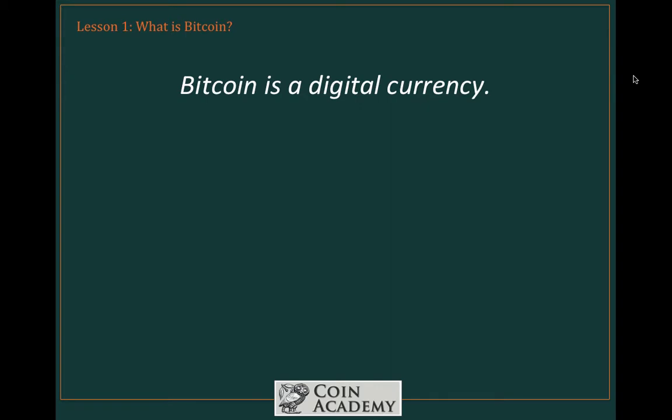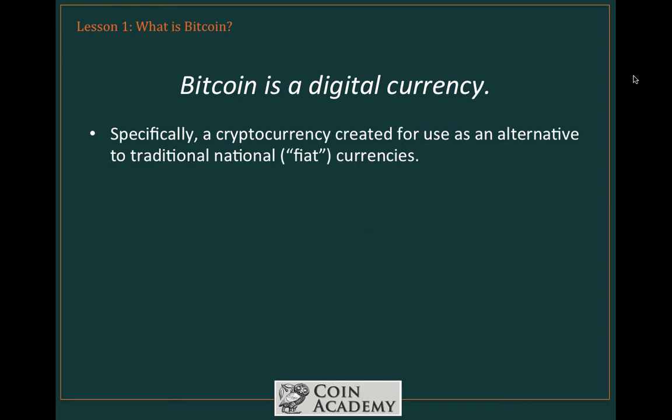A short definition: Bitcoin is a digital currency. That's a very simplistic definition, but it captures the essence of what makes Bitcoin unique. There is no physical counterpart for Bitcoin — no piece of paper, no scrap of metal that represents the currency. Instead, it's a string of numbers that resides on a computer. It is virtual. It is digital. Specifically, Bitcoin is a cryptocurrency, and it was created for use as an alternative to traditional national currencies, often referred to as fiat currencies.